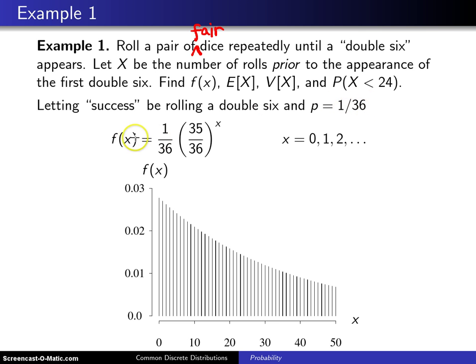Based on that, the number of rolls prior to the appearance of the first double 6 will have probability mass function which is geometric, and it will have PMF p times (1 minus p) raised to the x power for x equals 0, 1, 2, etc., failures before the first success.